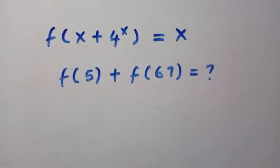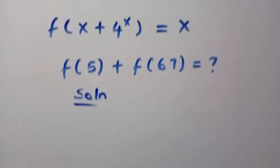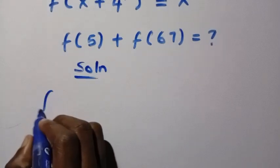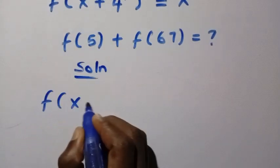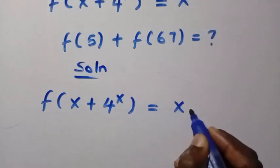Let's see how we can solve this. When you consider the solution, from the given function we have f(x + 4^x) = x.